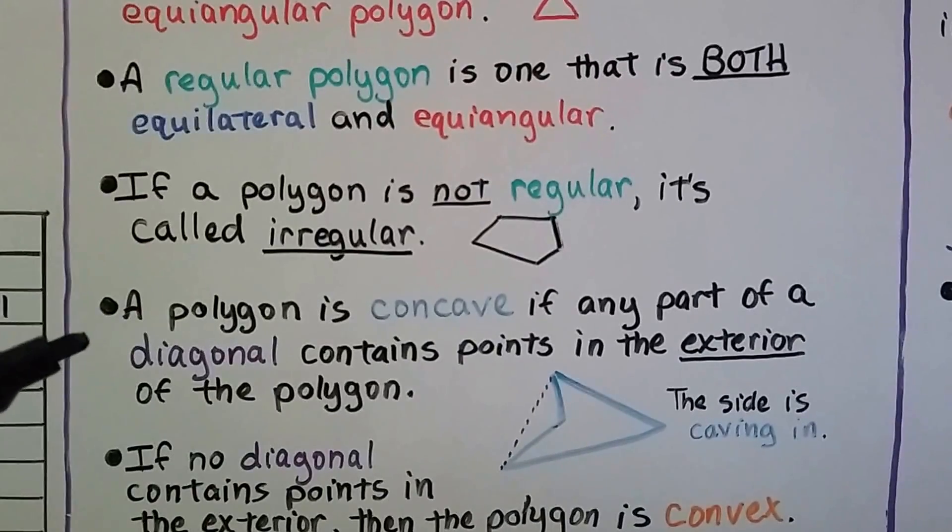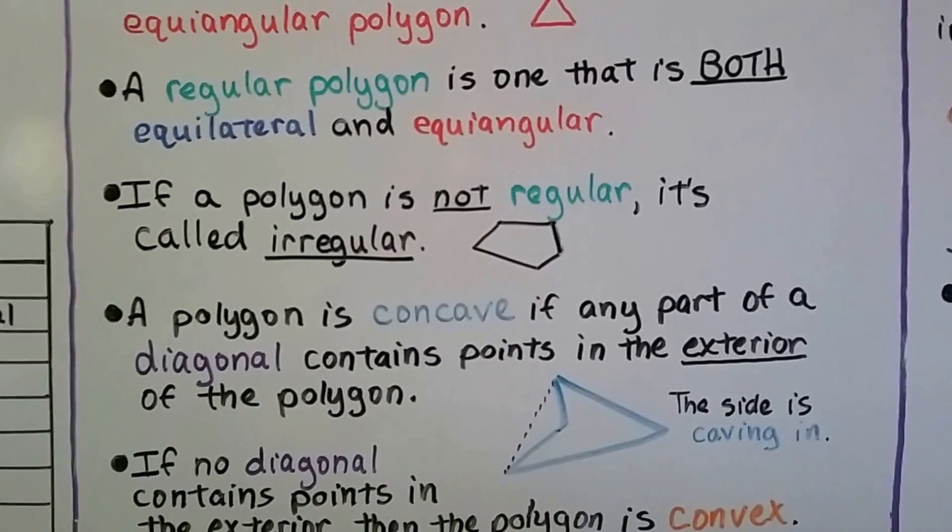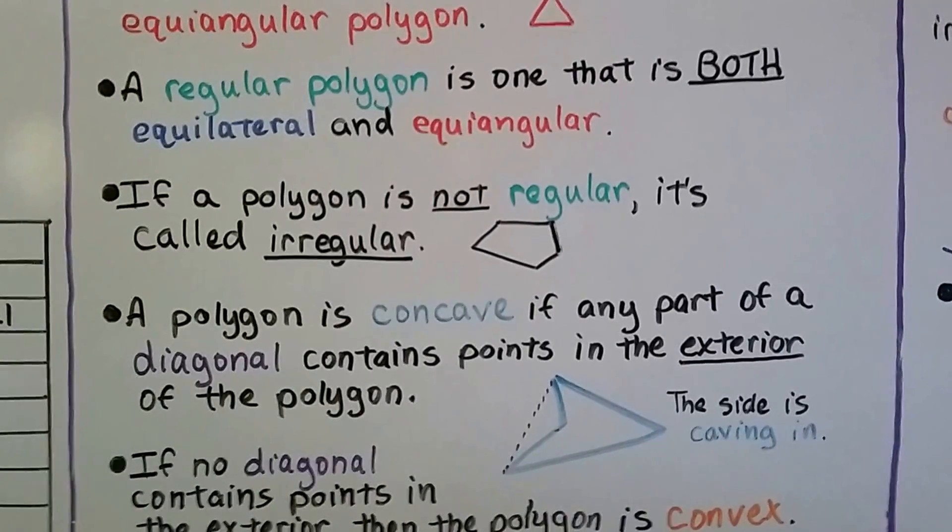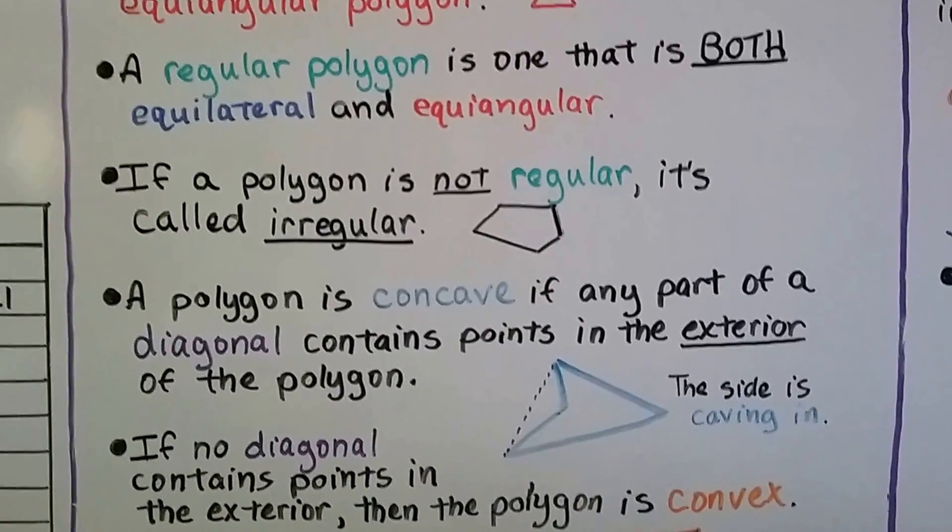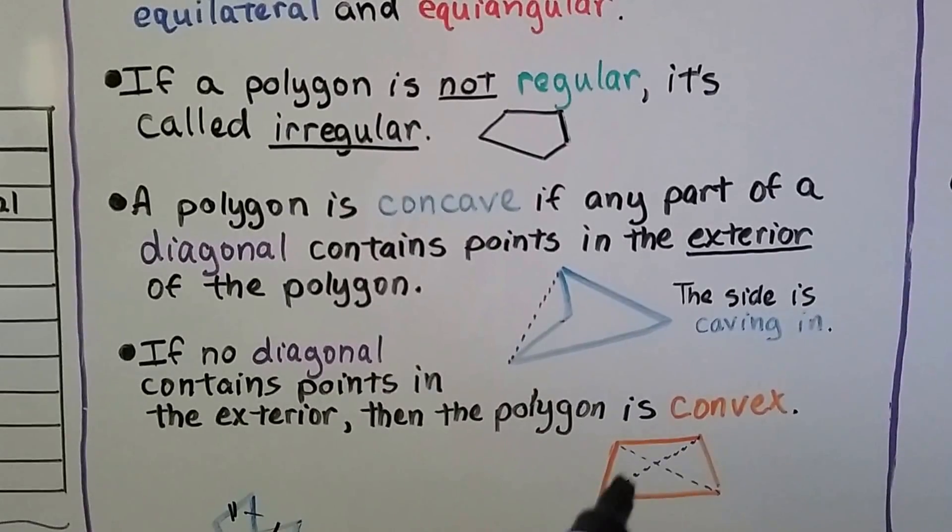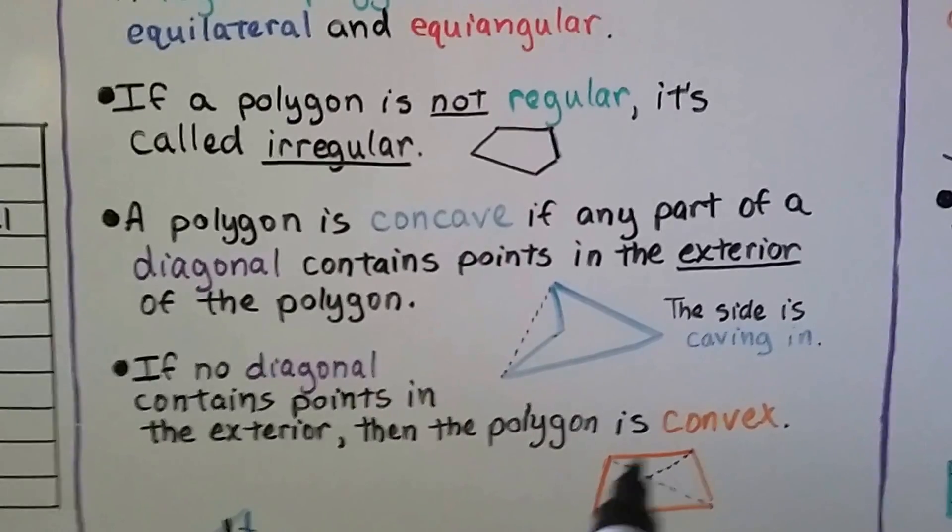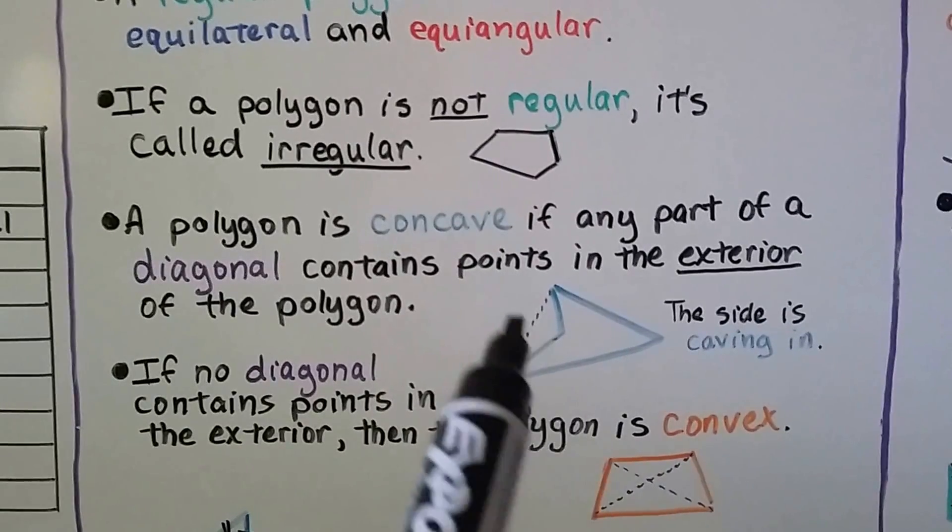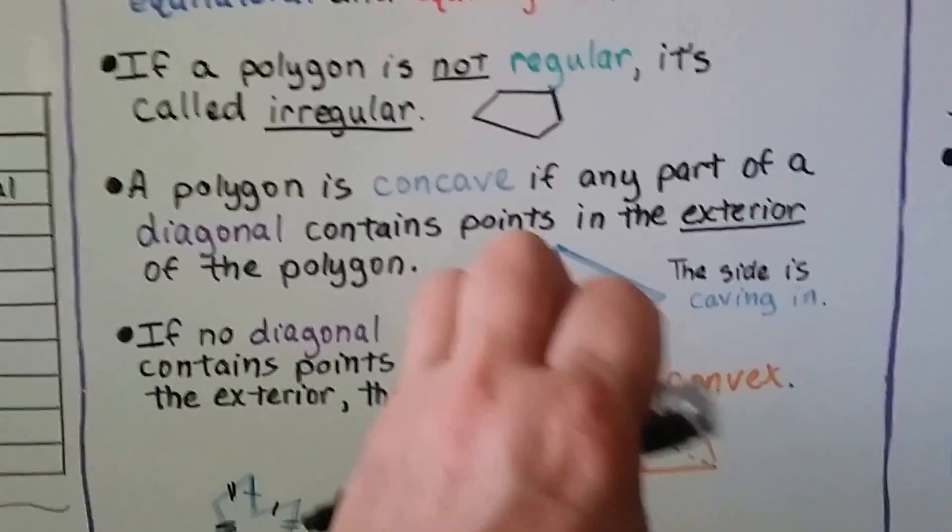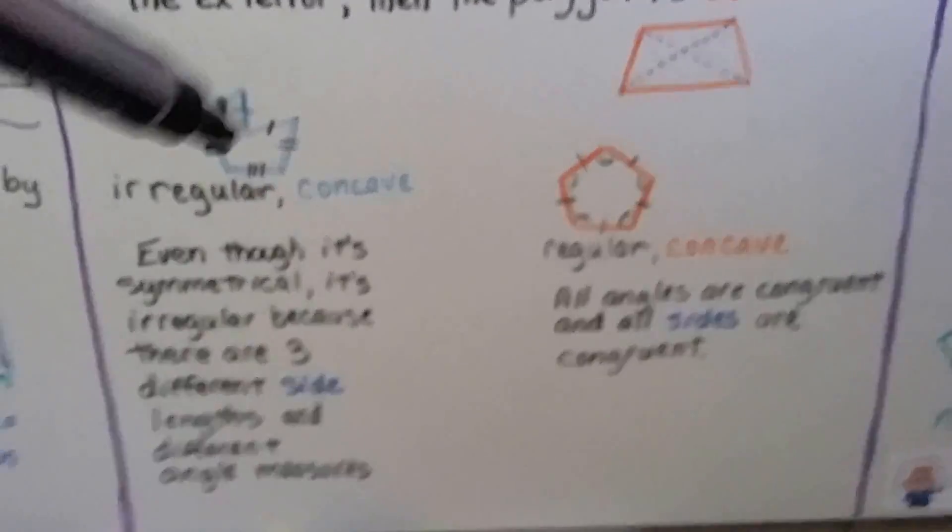A polygon is concave if any part of the diagonal contains points in the exterior of the polygon. See how this is kind of punched inward? We can think of concave as it's caving in. If no diagonal contains points in the exterior—here we have two diagonals on the interior—then the polygon is convex. If the diagonal points are on the interior, it's convex. If it's in the exterior, it's concave. This one is caving in. All of the vertices on this one are pointing outward. Now look at this one. It's caving in, so it's concave.